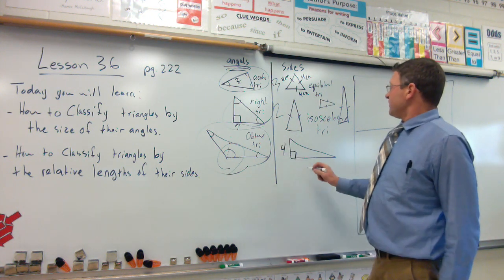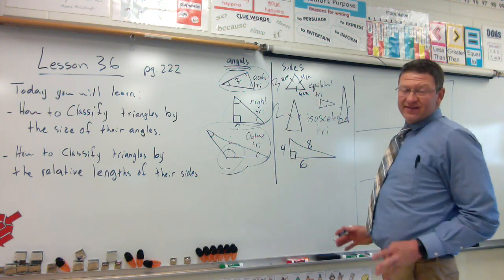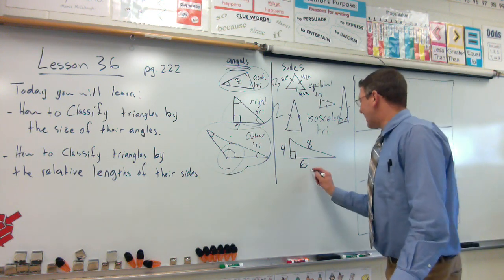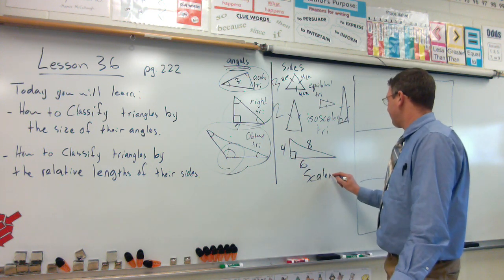It can't have a right angle in there. And then the last one with no sides the same. This would be like four centimeters. This would be six centimeters. This would be eight centimeters. All the sides are different. That one's called scalene triangle.